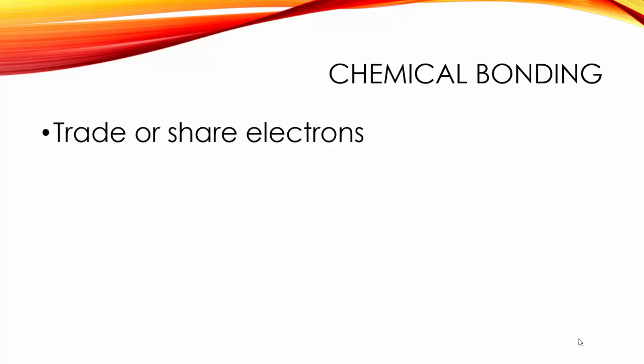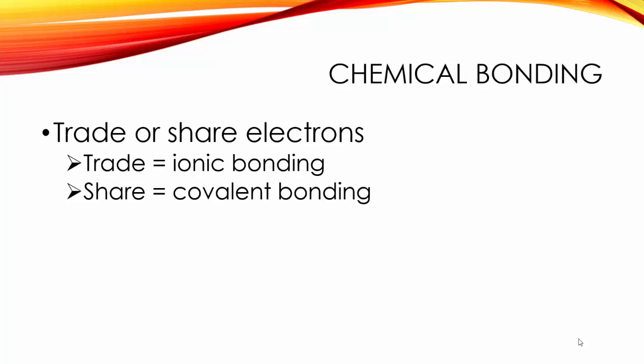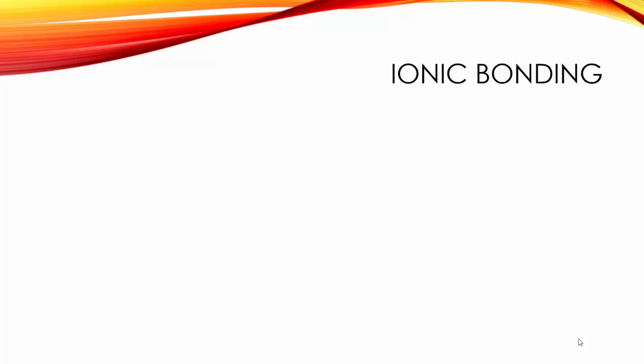For all chemical bonding we're either trading or sharing electrons. When we trade we're dealing with ionic bonding. When we share we're dealing with covalent. This video is going to be on ionic bonding.